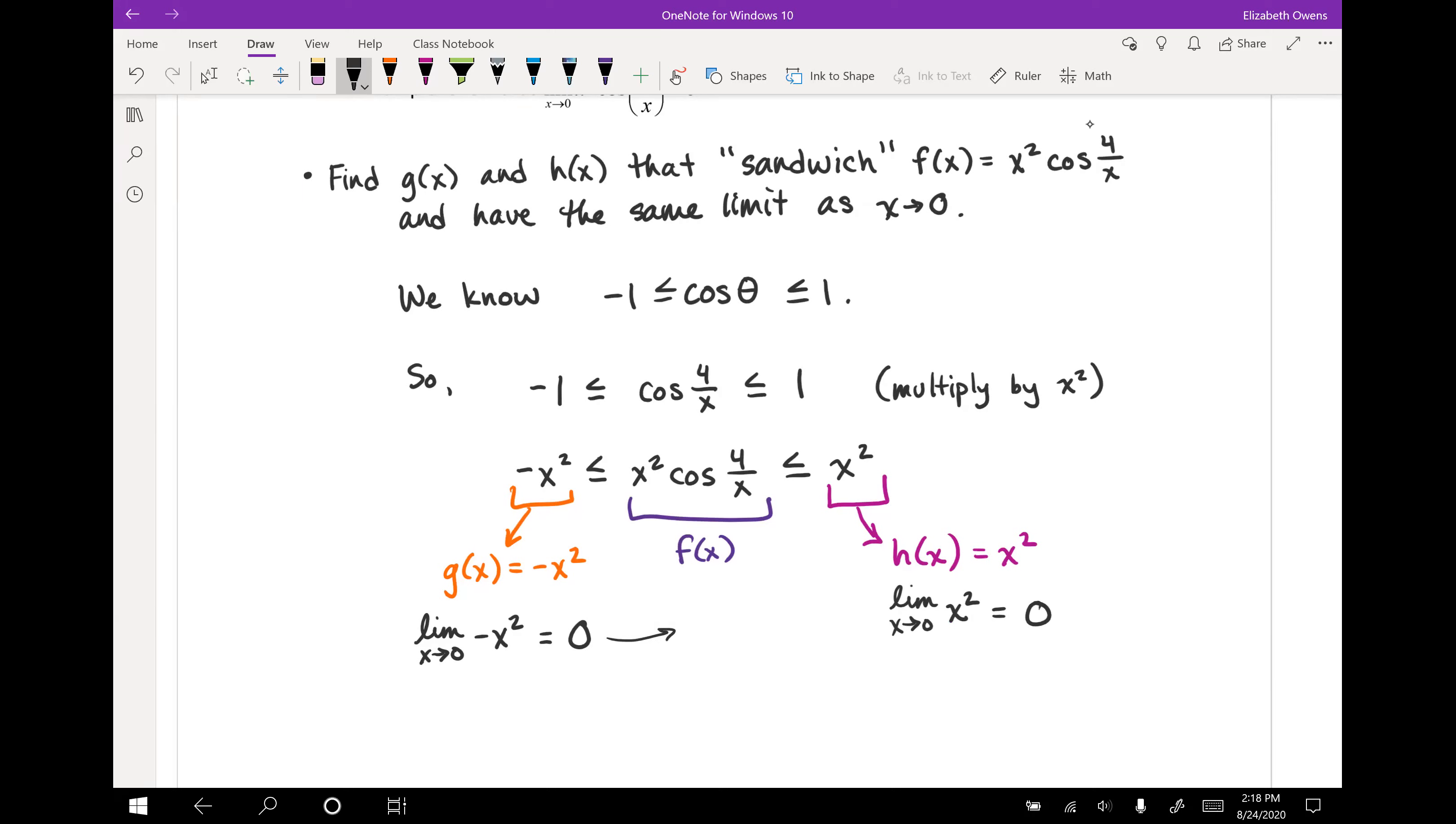So yes, these are equal. So we have our function sandwich set up. The two outer bread functions both approach the same limit. So our middle function is left with nowhere else to go. F of x is going to have to also approach zero. It's going to have a limit of zero as x approaches zero.